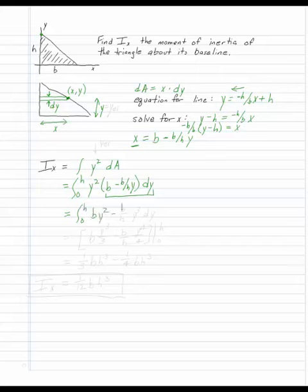I get by squared minus b over h, y cubed dy, which integrates pretty easily. This is a straight polynomial. y cubed over 3, and y fourth over 4, evaluated from 0 to h.